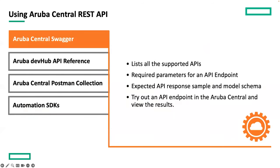First, we have the Aruba Central Swagger — usually the first place customers test out API calls, especially since the Swagger page is available within the Central application, making it extremely convenient. Within the Central app, you can generate your access tokens and then head to Swagger to make API calls — all without having to leave the app. Within Swagger, you have a comprehensive list of all APIs available for your Central account, including details like required parameters, expected responses, and what each parameter of the response body corresponds to. It's an invaluable tool for testing API features.